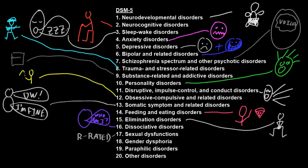Gender dysphoria involves distress or disability caused by a person identifying themselves as a different gender than that identified by society. This category requires an important distinction: if people experience distress or disability regarding gender identity, the distress and disability constitutes the disorder. A person identifying with another gender without distress or disability does not have a mental disorder. Previously, there was much stigmatization surrounding this issue, and older categorization systems did consider identification with another gender as a mental disorder in and of itself.